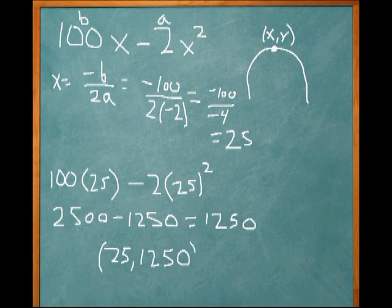So our vertex is at (25, 1250). That's our max. Our X value is going to be 25, our Y value 1250. The 1250 equates to our area, and 25 relates to what value of X into this equation gives us the maximum area.